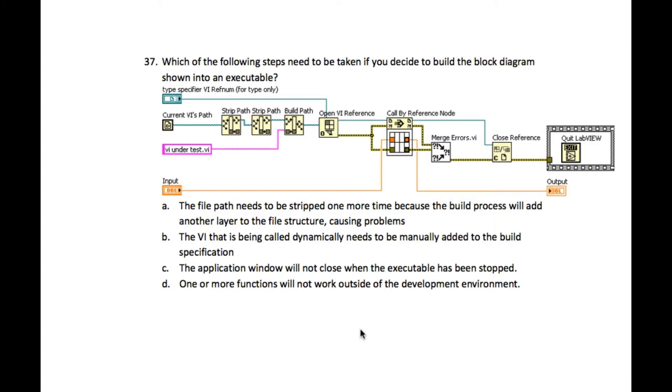This means the file path that is provided, for example in this case 'VI under test.vi', is not part of the application or the VI that is actually calling it. So in this case, 'VI under test.vi' will not be part of the executable.